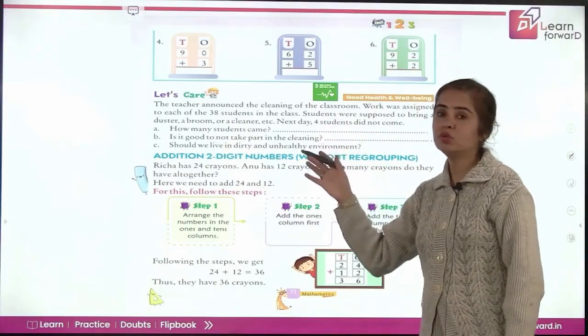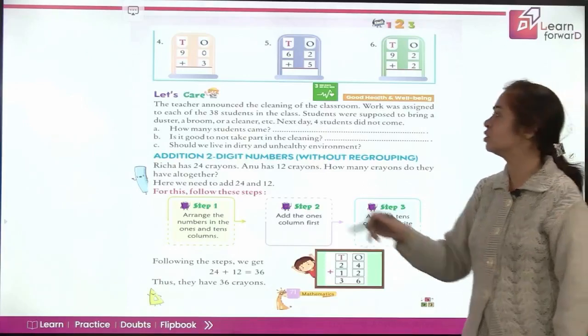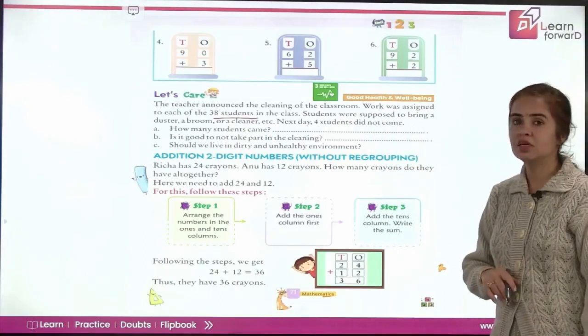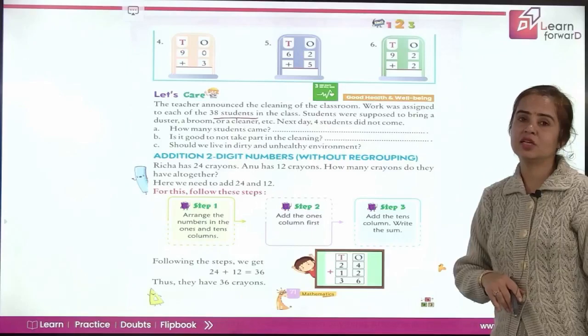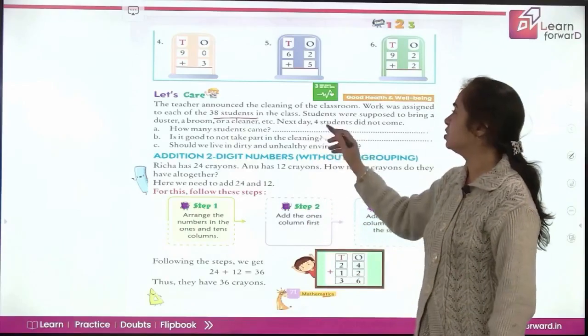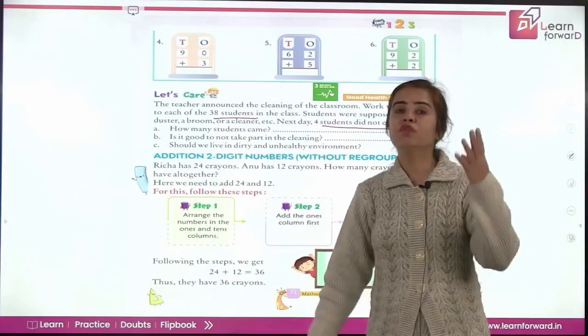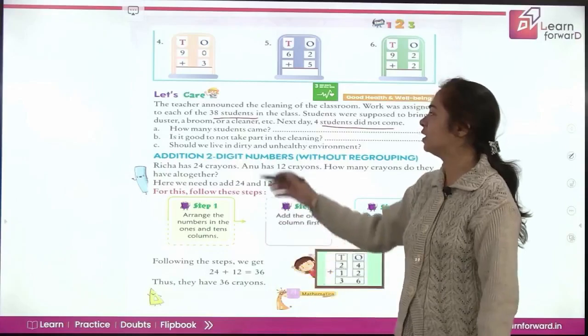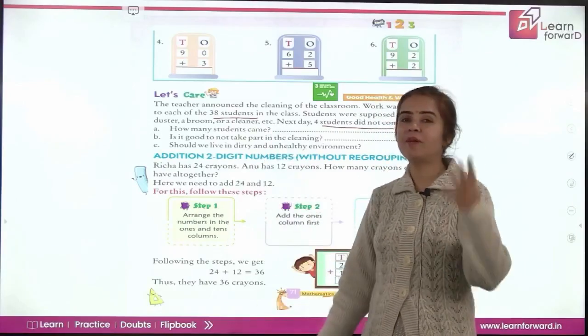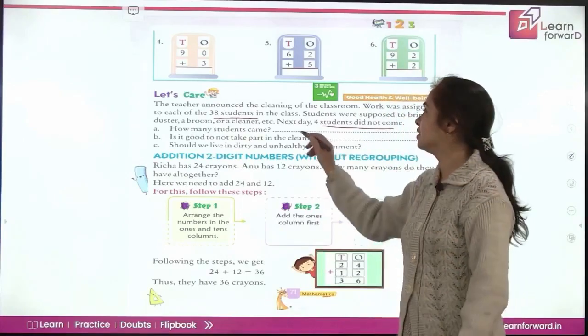Now you have to show that you care. The teacher announced the cleaning of the classroom work was assigned to each of the 38 students in the class. So how many students are there? 38. Students were supposed to bring a duster, a broom or a cleaner etc. So everybody just was assigned a duty what you are supposed to bring. Next day four students did not come. Out of how many? Out of 38, four students were on leave. They were absent. How many students came then? So what will we do? We will subtract. So how much is 38 minus 4? Let us count back. 37, 36, 35, 34. So the answer is 34 students came.